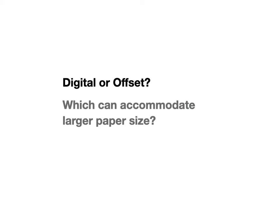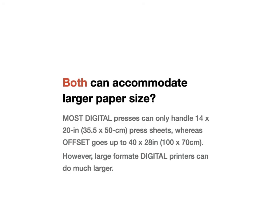Next question: digital or offset — which can accommodate larger paper size? It's actually a bit of a trick question. Most digital presses can handle 14 by 20, which is their standard. Most offset presses can go much higher than that. However, there is such a thing as a large format digital printer that can go to almost the size of a billboard. So technically digital can do a larger paper size, but you need a specialty large format digital press — your run-of-the-mill corner printer is not going to have one.